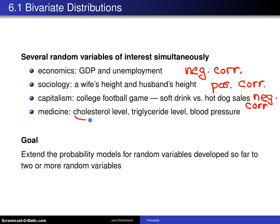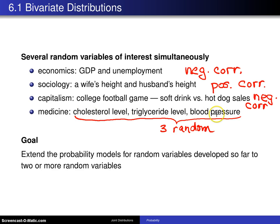In medicine, you have cholesterol level, triglyceride level, and blood pressure. This time we have three random variables, not just two, and they have a trivariate distribution. So for now we're going to stick with bivariate distributions, but you will get to a case with three random variables where you will have a trivariate distribution. The goal here is to extend the probability models for random variables — that is, univariate random variables — developed so far, to two or more random variables.